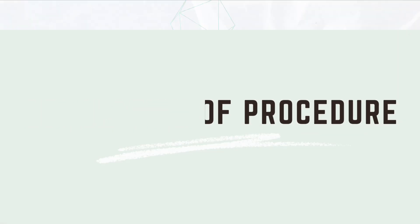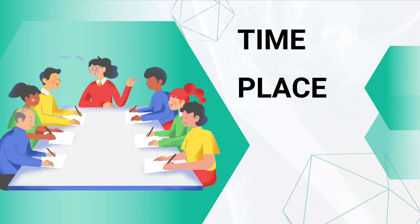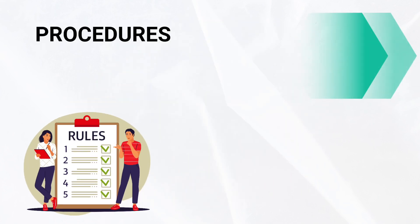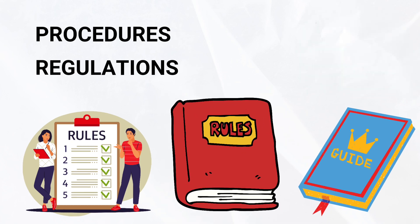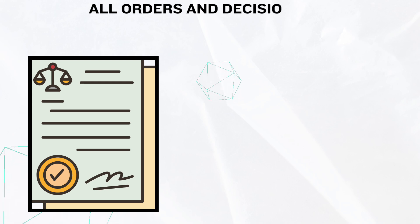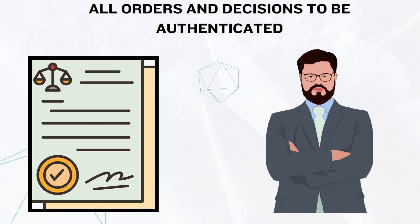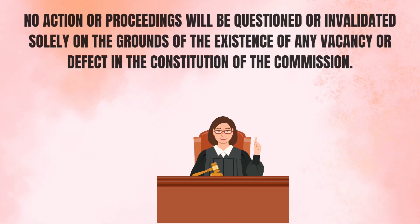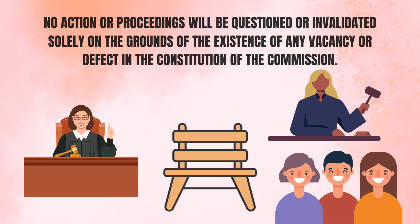The NHRC will convene meetings at times and places determined by the chairperson, and has the power to establish its own procedures through regulations, subject to the provisions of the Act and the rules established. All orders and decisions of the NHRC will be authenticated by the Secretary General or another officer authorized by the chairperson. No actions or proceedings of NHRC will be questioned or invalidated solely on the grounds of any vacancy or defect in its constitution.